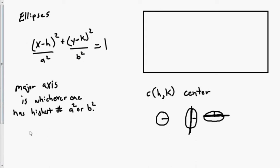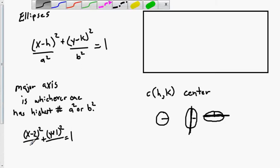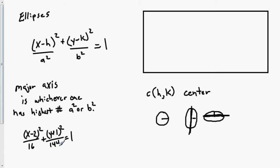For example, if we had x minus 2 squared over 64 plus y plus 1 squared over 4, which one is bigger — a squared or b squared? Obviously a squared is bigger, so x is the major axis and it's a fat ellipse. Now if we change that to 16 and 144, all of a sudden y has the bigger value, therefore y is the major axis and it's going to be a tall ellipse, not a fat ellipse.